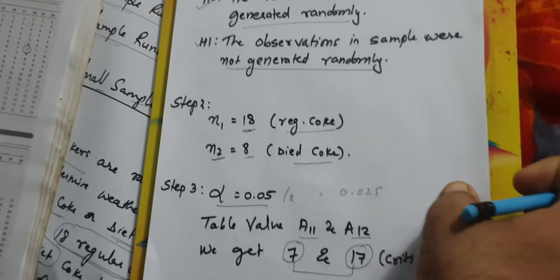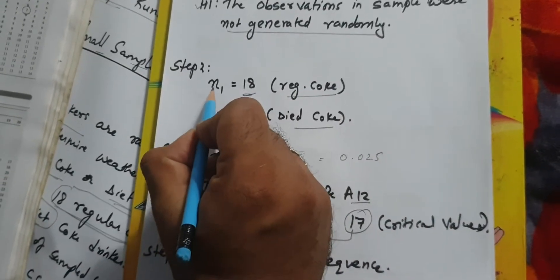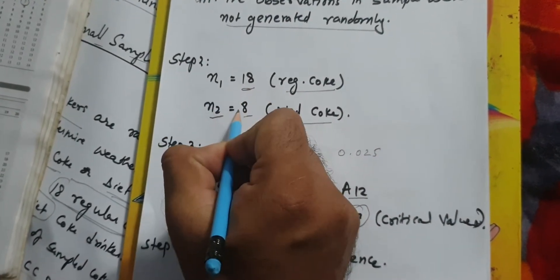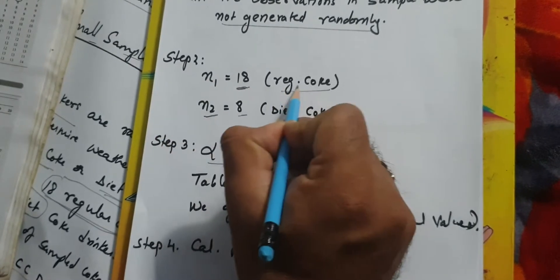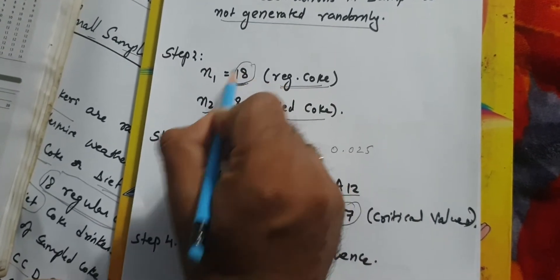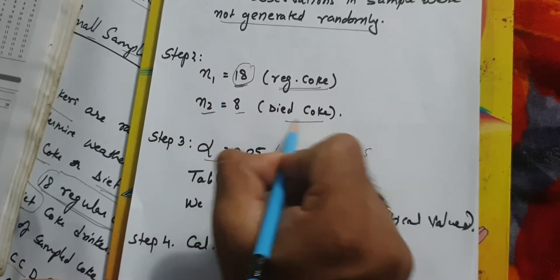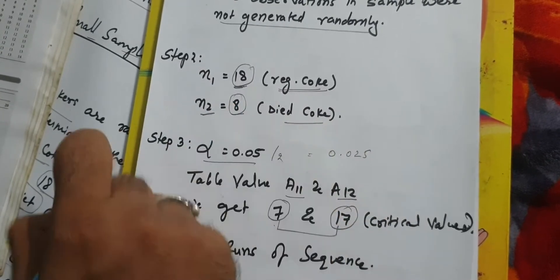Step 2 is very simple. We need to write down N1 and N2. N1 represents regular coke which has the number 18. N2 represents diet coke which has number 8.